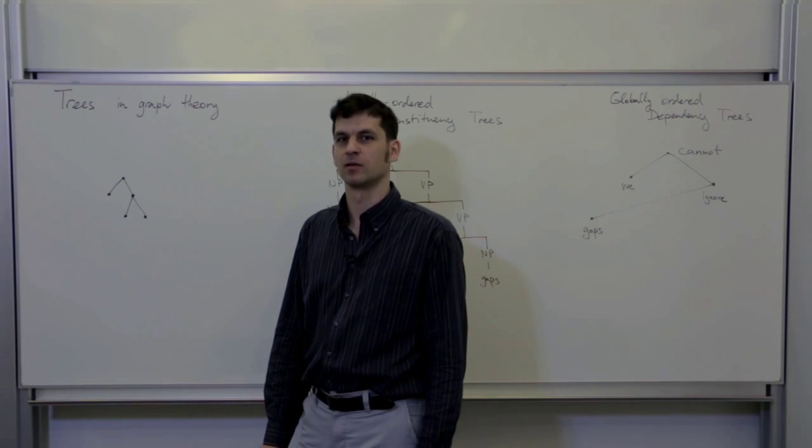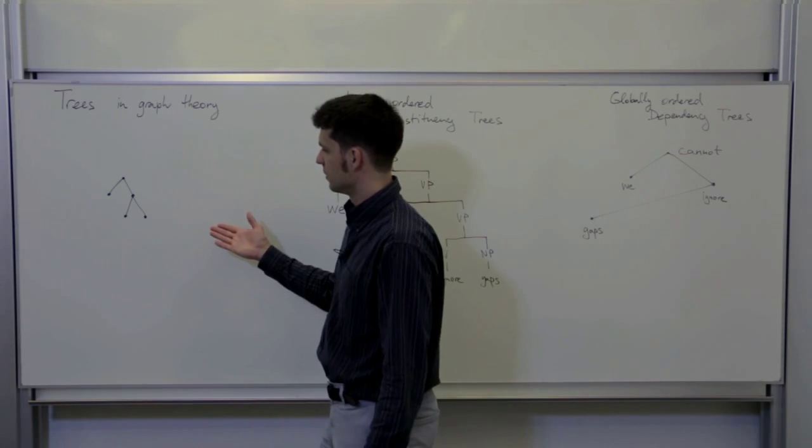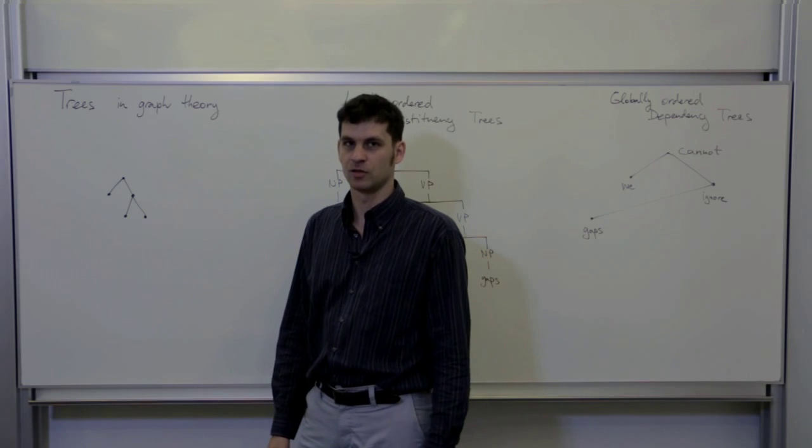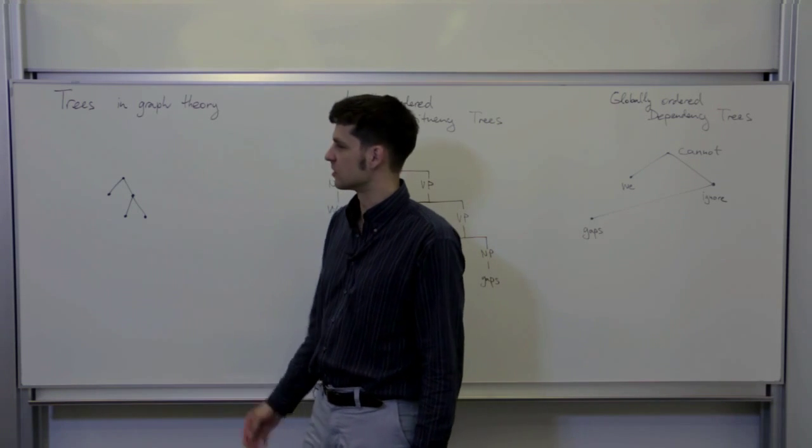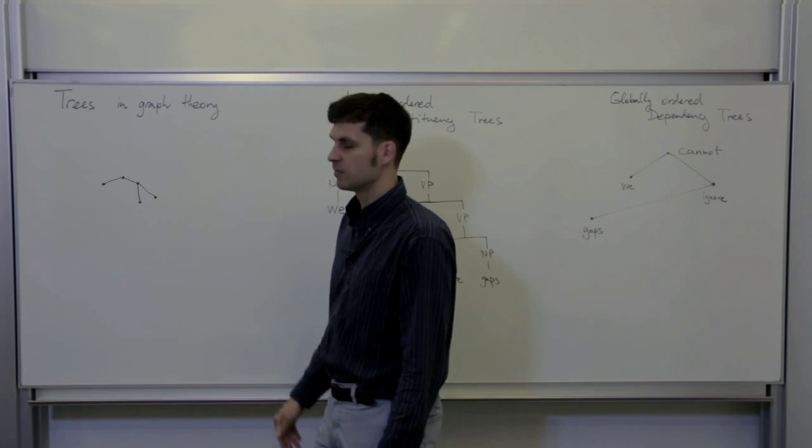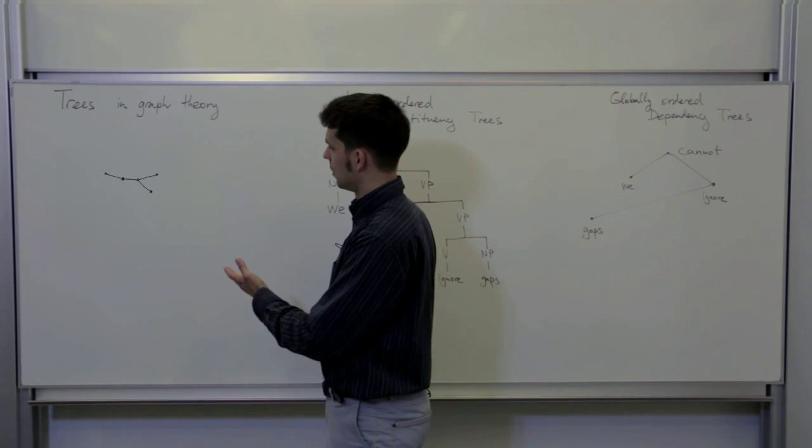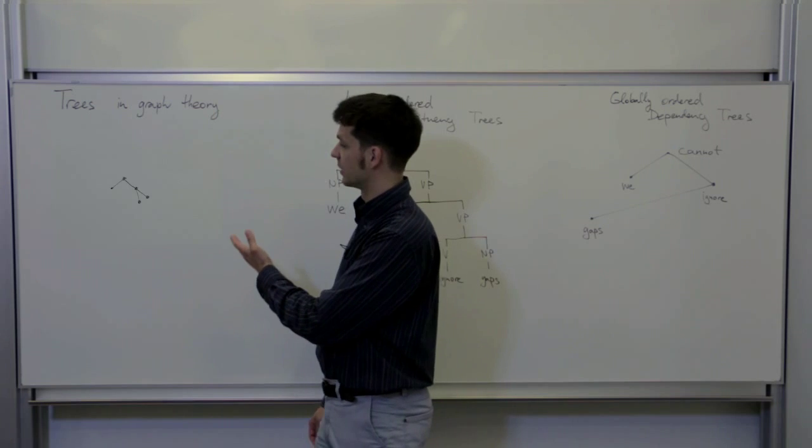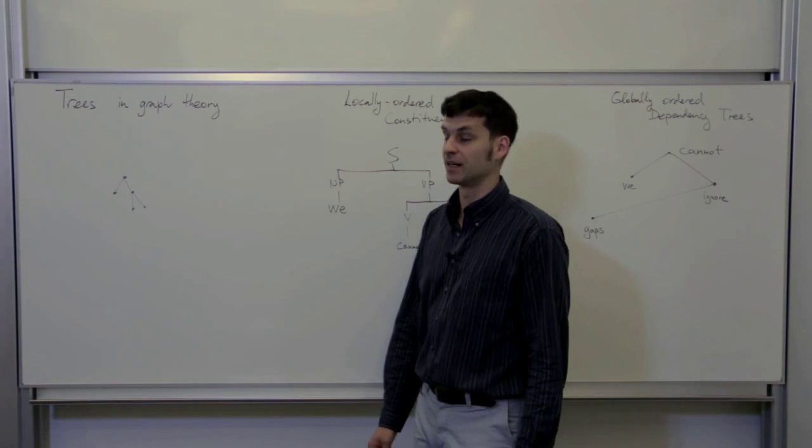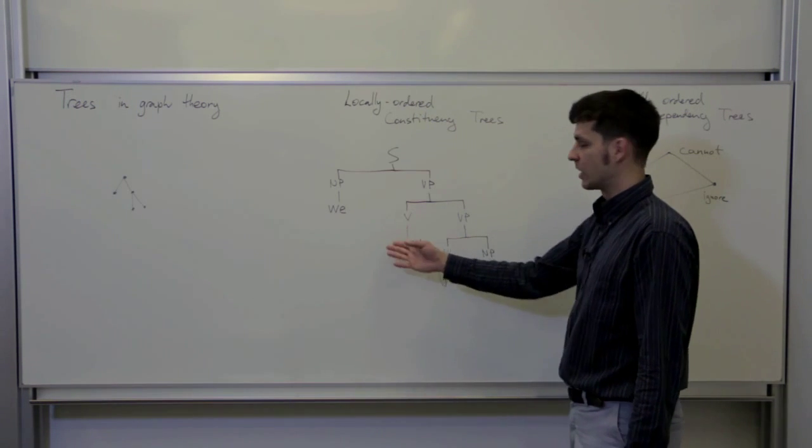One thing that people often take for granted when looking at the drawing of a tree is the relative or absolute position of its nodes. A tree as a structure in graph theory keeps no record of where its nodes are located. So these are actually many drawings of just a single tree. Let's have a look at the syntactic analysis of this example sentence: We cannot ignore gaps.